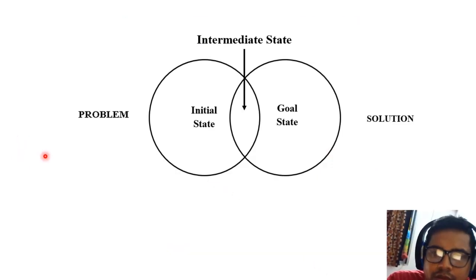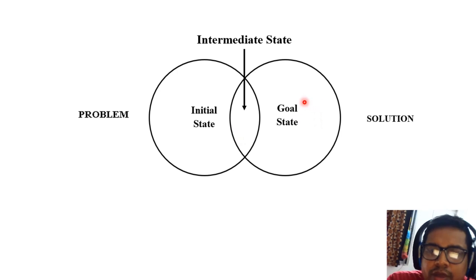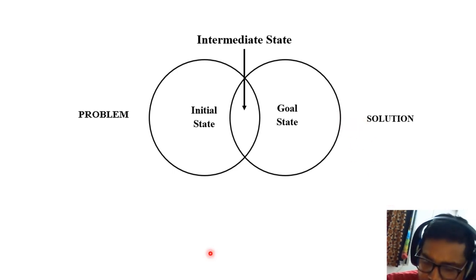In this slide, we pictorially present a problem and the corresponding solution based on initial state and goal state. Their intersection is actually the intermediate state. At this state, we have to provide some specific input from our side in order to achieve the goal state. This is all about the formalization of a complete computational problem. Thank you.